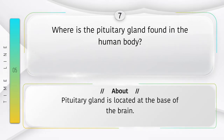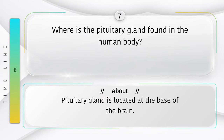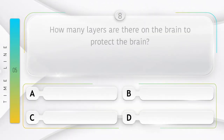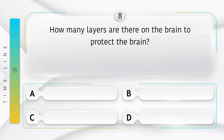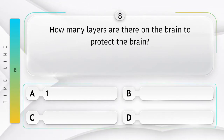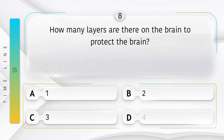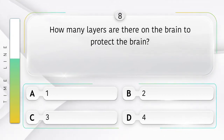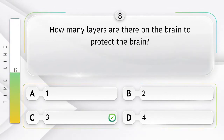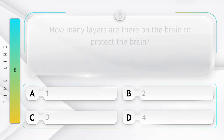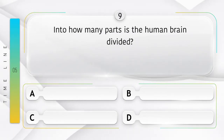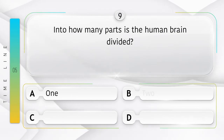Did you know the pituitary gland is located at the base of the brain? How many layers are there on the brain to protect it? Option A: one, B: two, C: three, D: four. Answer is option C: three.